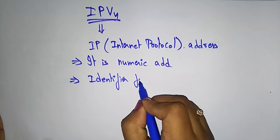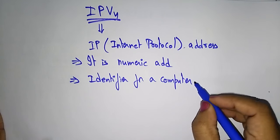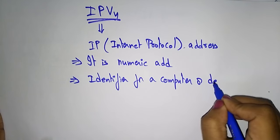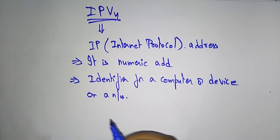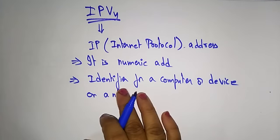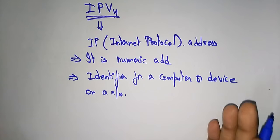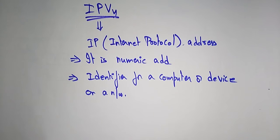IP is an identifier for a computer or device on a network. If you want to send information to some destination, to some system or to some computer, you need to identify an address. That address is nothing but the Internet Protocol Address. With the help of the Internet Protocol Address on a network, you can identify the destination device.